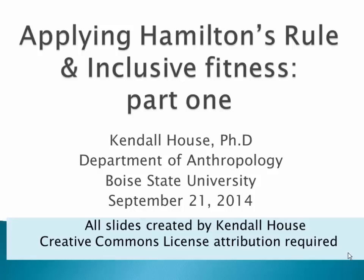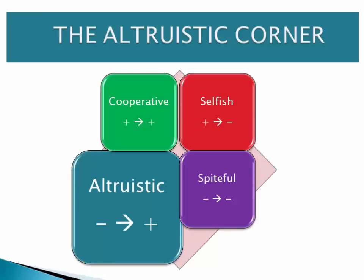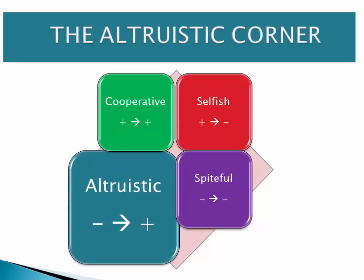This presentation is called Applying Hamilton's Rule and Inclusive Fitness, Part 1. The aim is to relate Hamilton's Rule to studies of animal behavior to help you understand it better. Hamilton was trying to explain behavior that appeared to have altruistic consequences — meaning it harmed the actor while benefiting others. The harm was reduced reproductive success of the altruistic actor, and the benefit was improved reproductive success of the recipients.